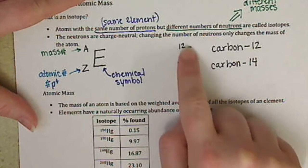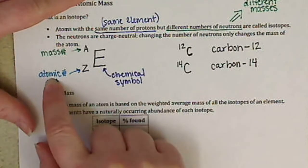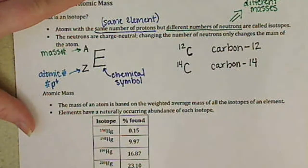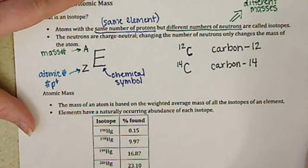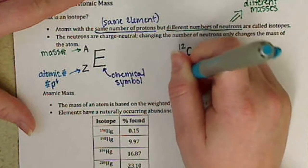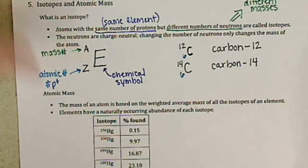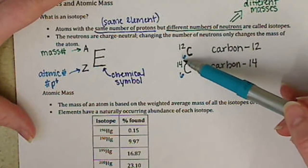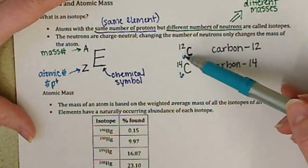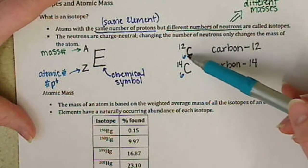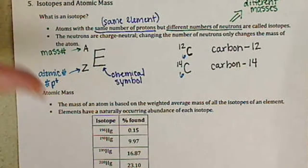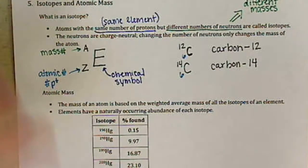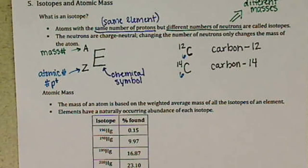You'll notice that when I wrote these symbols, I actually left off the atomic number. Most of the time, the atomic number is left off. Sometimes it can be included, and that's fine. The reason why a lot of times we leave it off is because if we know the chemical symbol, we know the atomic number. If we know the atomic number, we know the chemical symbol. So these are two pieces of the same information. So sometimes, a lot of times, that atomic number is just left off.